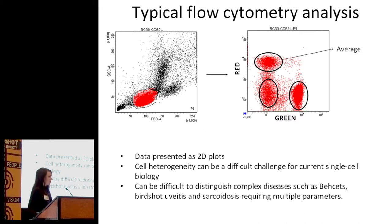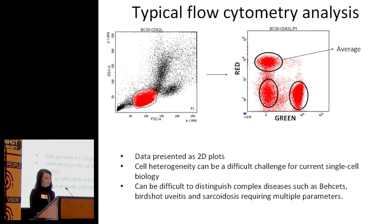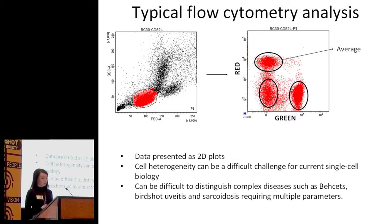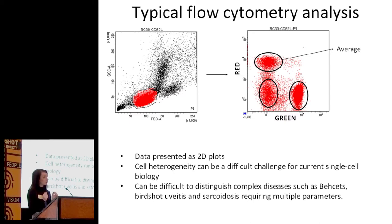The problem with this method of analysis is that if you've got a large amount of cell heterogeneity, it can be difficult for this analysis to separate out those differences. So if you've got a complex disease such as Bechet's, birdshot, or sarcoidosis that needs to look at multiple parameters at any one time, this two-dimensional gating strategy is quite difficult to use to distinguish them.